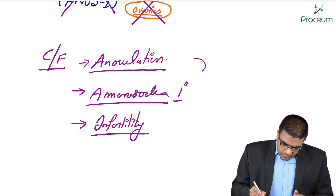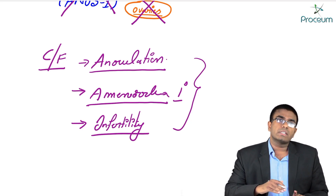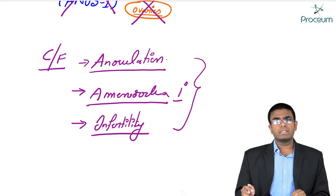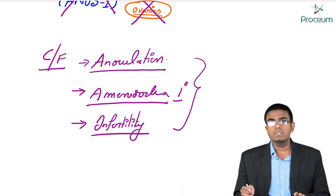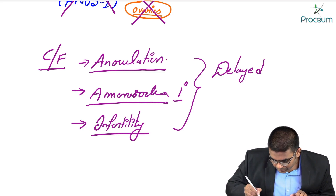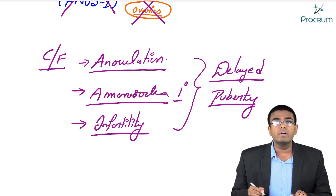Usually a female will have her normal menstrual cycles by age 12 to 13. But these females, having low amounts of gonadotropic hormones, will not have their normal menstrual cycles started. So she is going to have delayed puberty — Kallmann patients will suffer with delayed puberty.